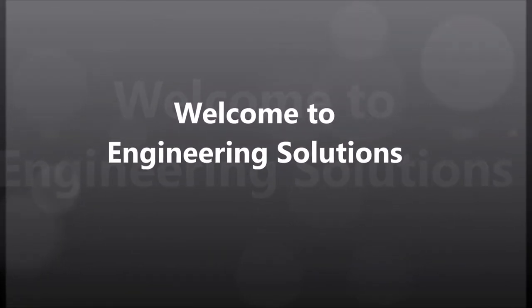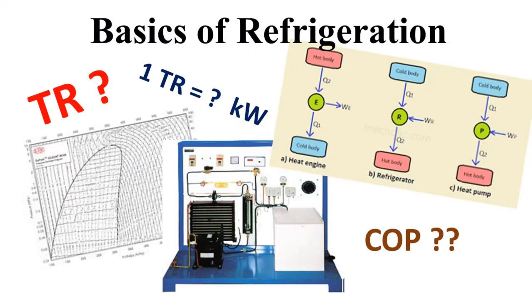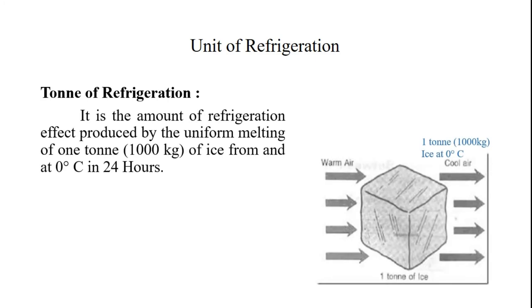Hello friends, welcome to my channel Engineering Solution. In this video we will go through some basic terms related to refrigeration. First of all, we will see the unit of refrigeration. The refrigeration effect, or simply refrigeration, is measured in a unit called ton of refrigeration, also called TR. It is the amount of refrigeration effect produced by the uniform melting of 1 ton of ice from and at 0°C in 24 hours. In simple words, if we keep 1 ton (1000 kg) of ice at 0°C, the cooling effect produced by it in 24 hours is called 1 ton of refrigeration.